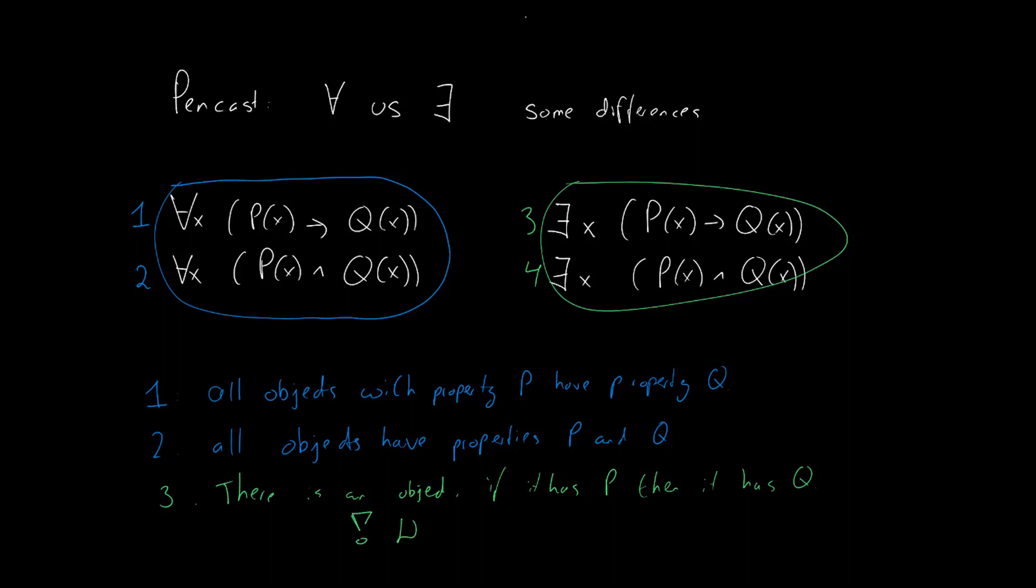Imagine that we have an object a again, which has property Q but not property P. Then, statement 3 is true. So, statement 3 doesn't actually state that there is an object with property P.